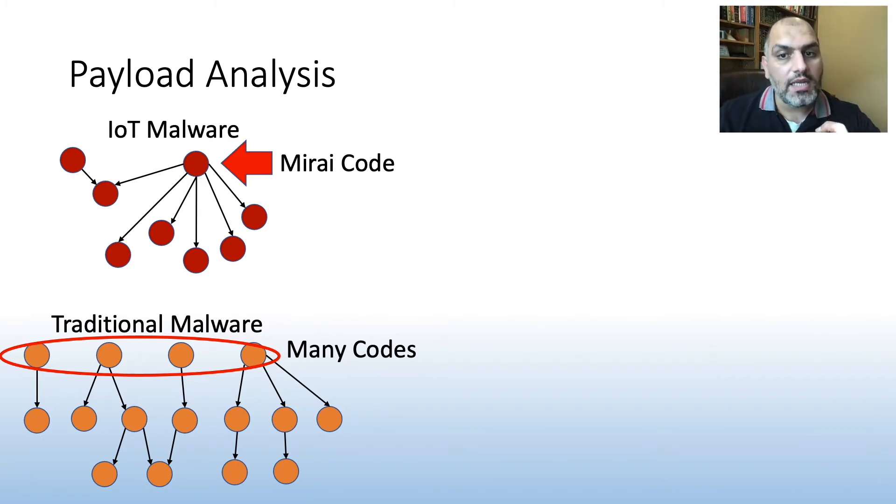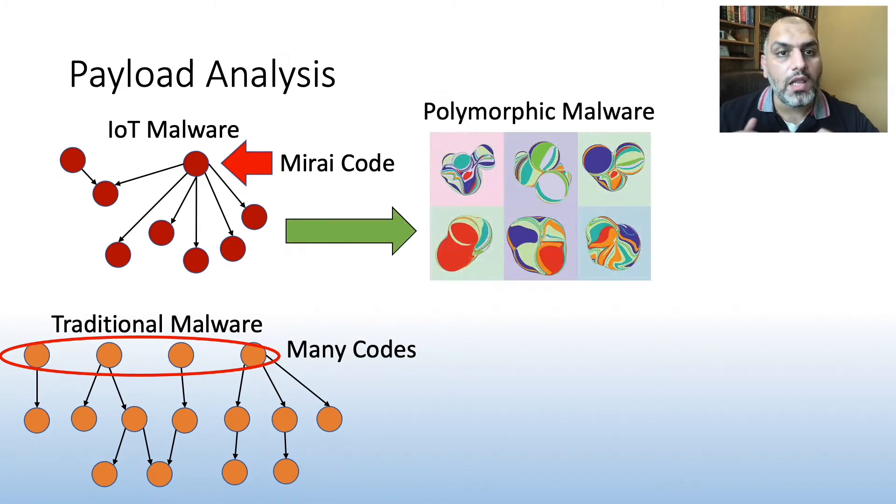However, we did see IoT malware take advantage of polymorphic techniques like packers. We found at least 3.3% of the studied samples to use packers. This is a lower bound because this is what our tools were able to detect.